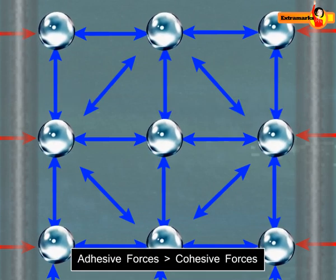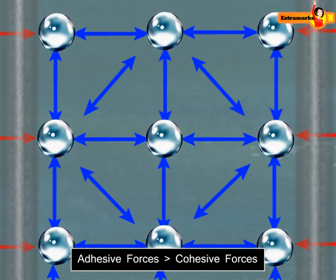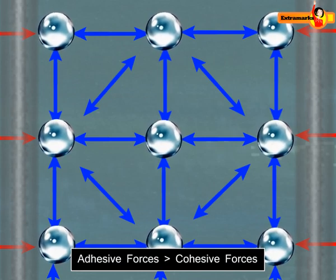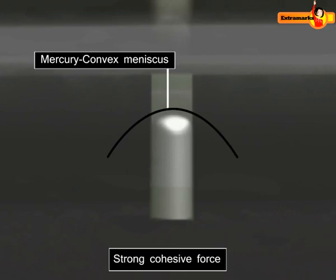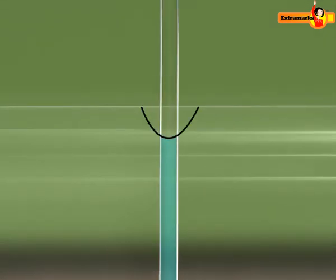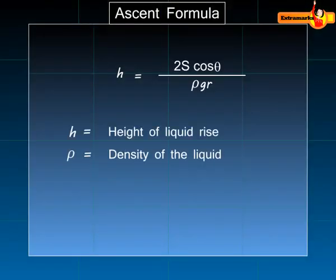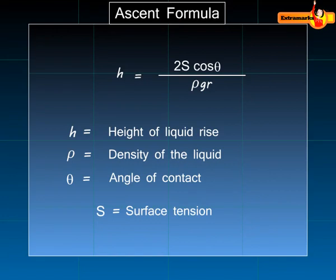Capillary action only occurs when the adhesive forces are stronger than the cohesive forces. Mercury has a convex meniscus due to strong cohesive forces, while water has a concave meniscus due to strong adhesive forces. Height of the liquid rise in a capillary tube is given by the formula as depicted on screen.